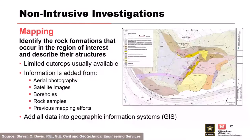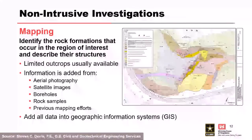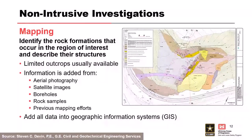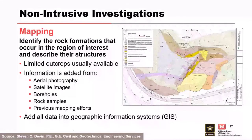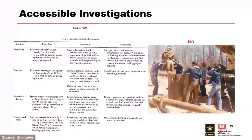Mapping is another common non-intrusive method used to identify surficial features that are outcropping. There might be limited outcrops available, but you can still derive a lot of information by projecting features — maybe our discontinuities — into the ground surface. We add information to our mapping by aerial photography, satellite images, drill hole information, rock samplings, and previous mapping efforts. You should have a well-put-together geologic map, especially once you're in the supplemental investigation phase, to deliver to the project team. Also, make sure you're getting it into a spatial format usable on the computer — GIS or CAD — not just a hand-drawn image.